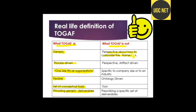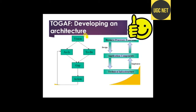TOGAF is not about how to customize the framework, not artifact-driven, not specific to company size or industry, not ontology-driven, not a tool — it is a framework and does not prescribe a specific set of deliverables. The TOGAF architecture development method involves: visioning the architecture, identifying gaps, taking corrective actions, and iterating. The process moves through business functions, design, application components, and technical infrastructure.